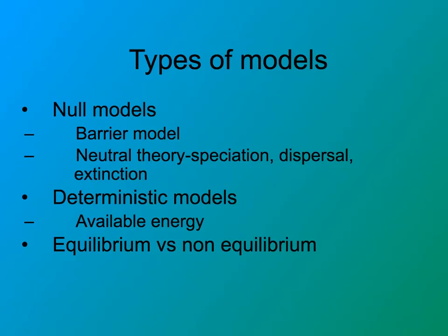There are a number of models used to explain biodiversity. Null models are those in which it doesn't matter which species comes in and replaces another. Neutral theory involves speciation, dispersal, and extinction. And then there are deterministic models that depend on the amount of available energy for dispersal. There are both equilibrium and non-equilibrium models — some communities are more diverse if they're not at equilibrium.